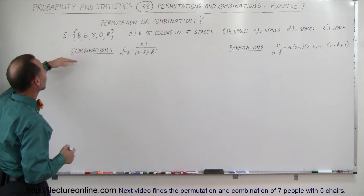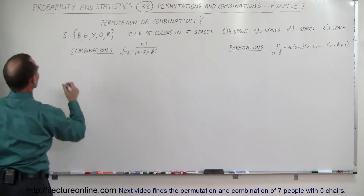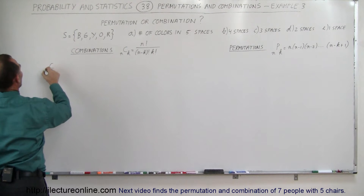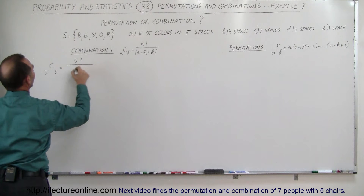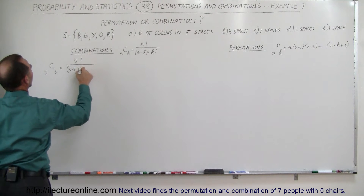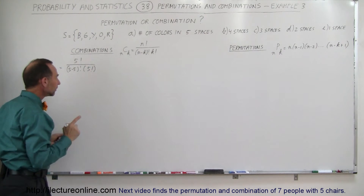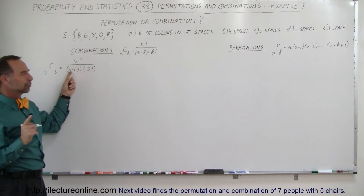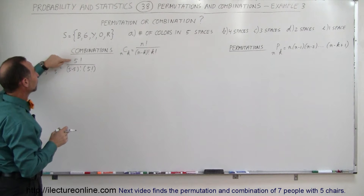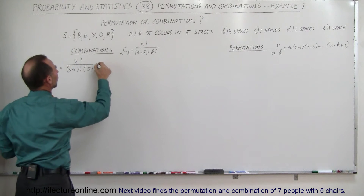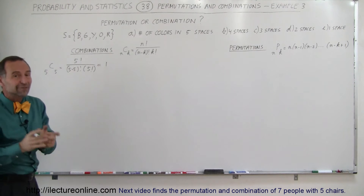Let's start with the number of combinations of five colors in five spaces. Using the combinations equation, C(5,5) equals five factorial divided by (five minus five) factorial times five factorial. Now five minus five factorial is zero factorial, and by definition zero factorial equals one. So we have five factorial divided by five factorial, which equals one. There's only one combination in which you can take five colors and put them in five spaces.